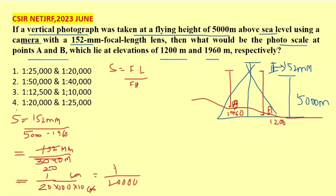In a similar way, the same way we will calculate the other part. 1 by 152, 5000 minus...